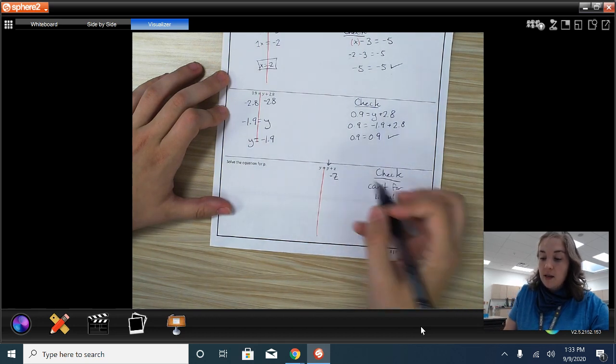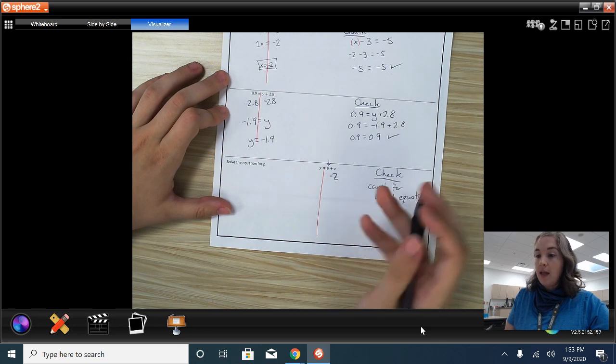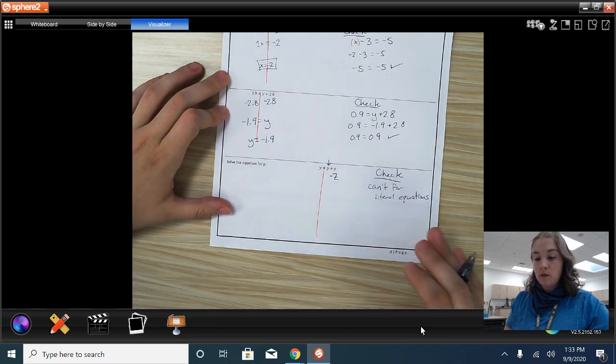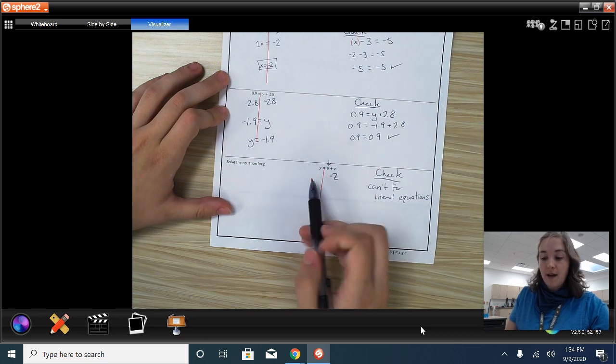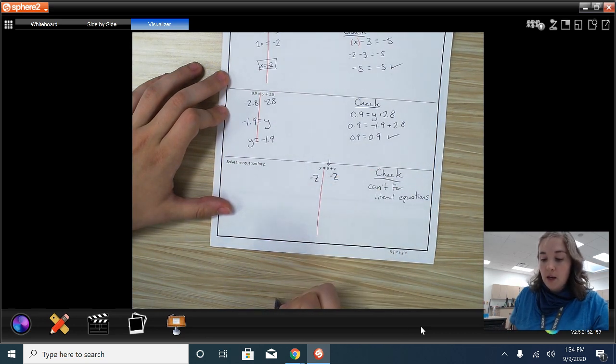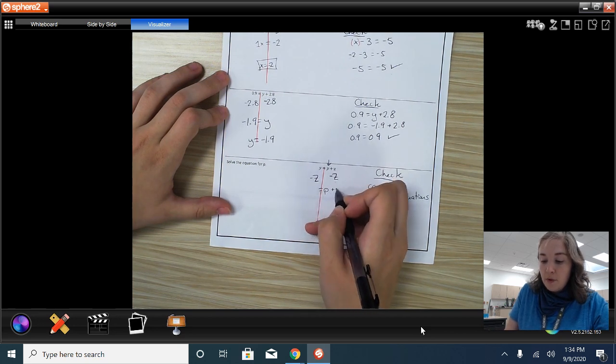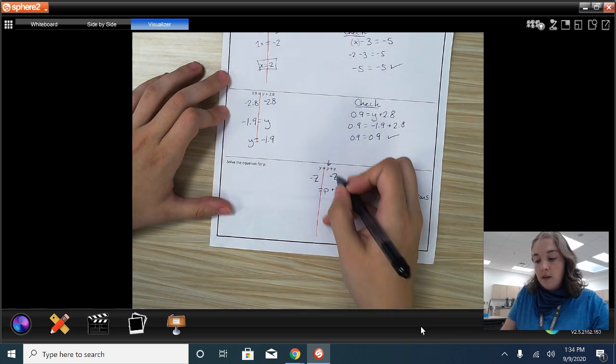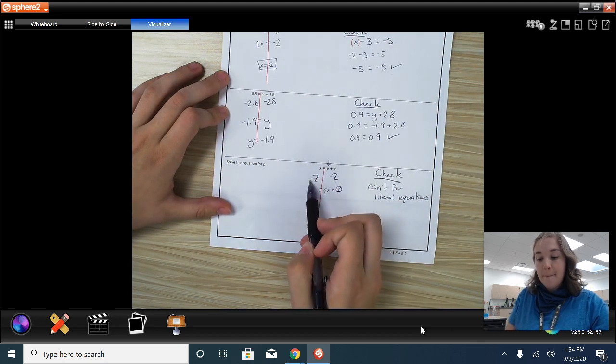Plus Z minus Z, it's gone. Right? I add to subtract to 0. So Z is now gone from this side. But whatever I do to one side, I have to do to the other. So I subtract Z from the other side. So now we have P all by itself plus 0 I'll put on there because that zeroed out. And on our left side here, we have Y minus Z.